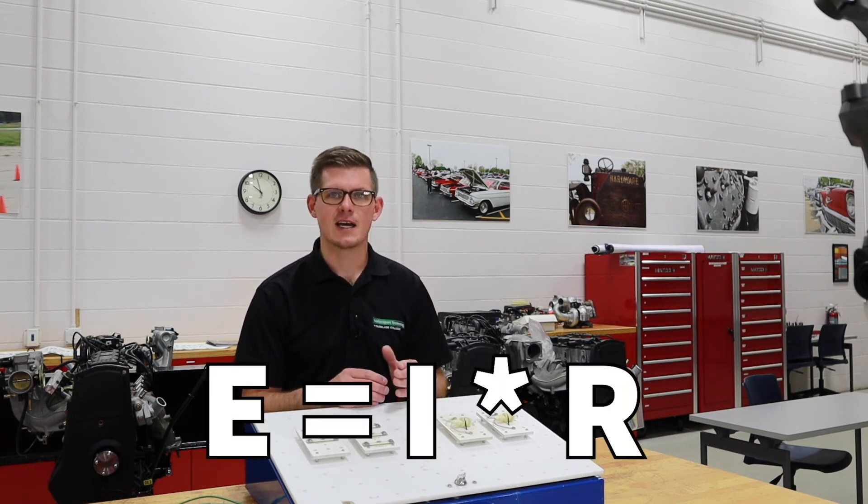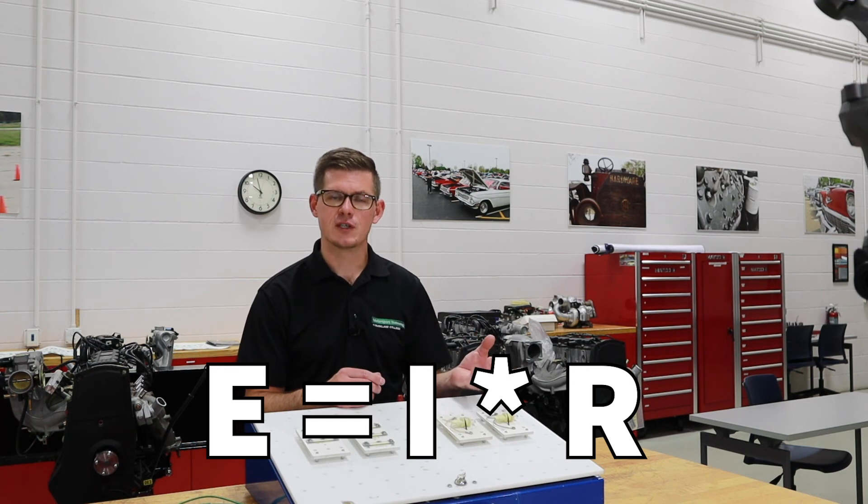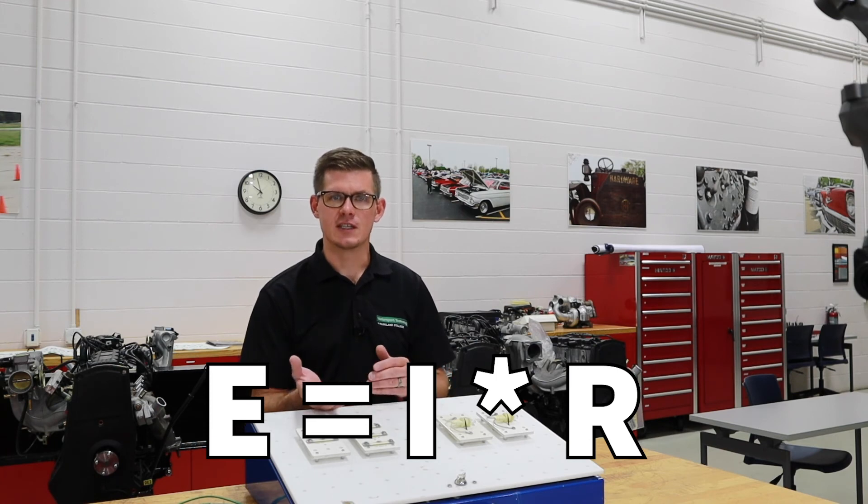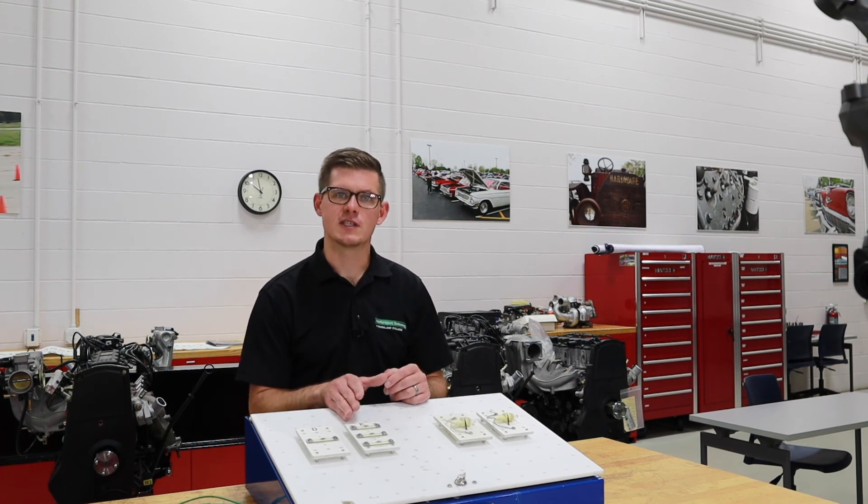The equation of Ohm's Law is E equals I times R, and that represents E for electromotive force, which is voltage. So voltage is equal to current, we refer to current as intensity, which is the I, times resistance, which is the R, probably the most self-explanatory one in the bunch. This helps us understand the behavior between voltage, current, and resistance.